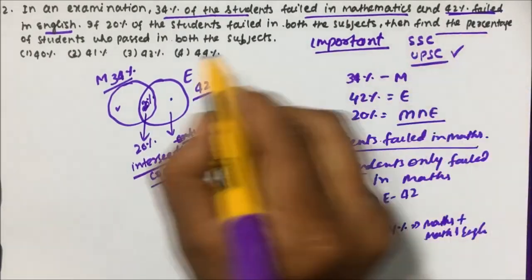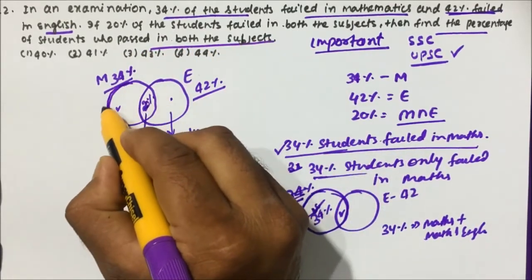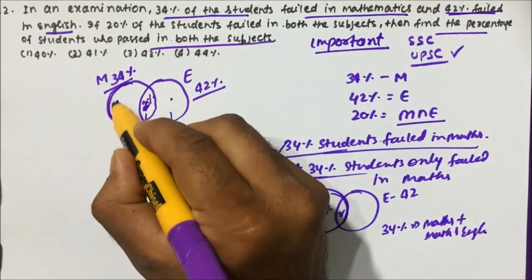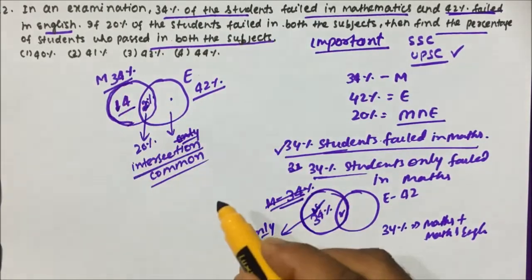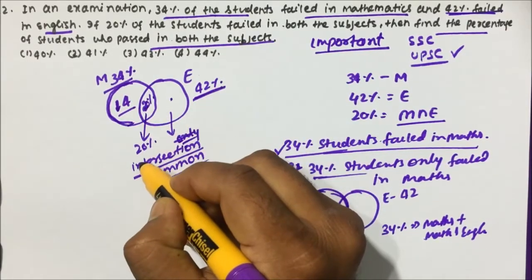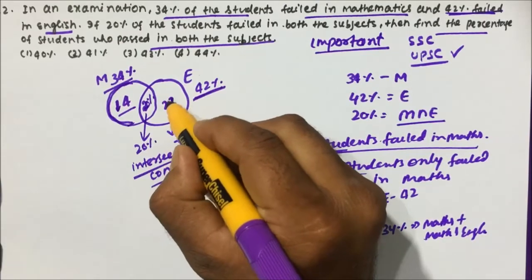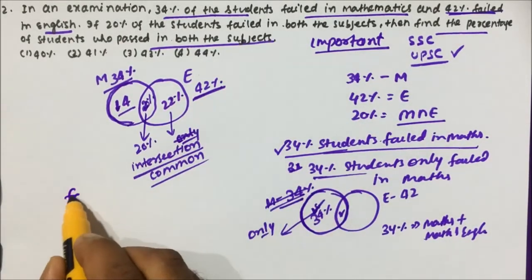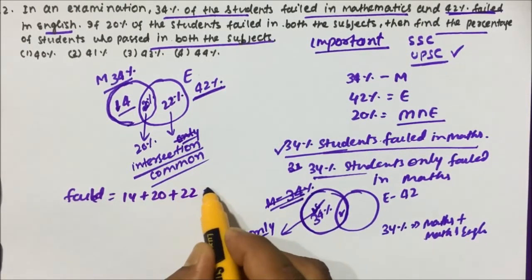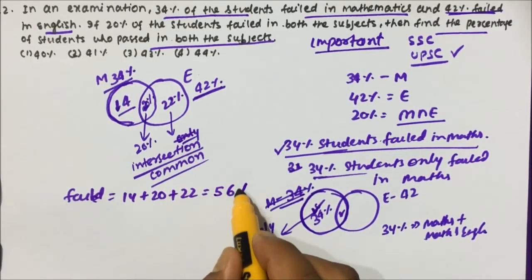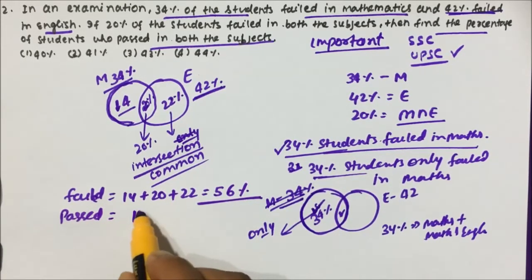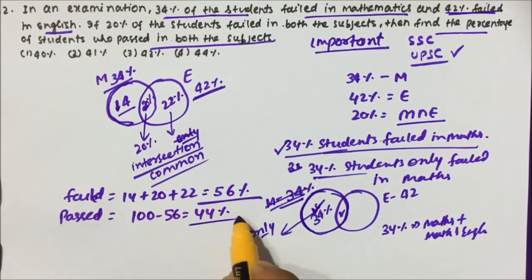They are asking for the percentage who passed in both subjects. Total maths circle is 34 percent; 20 percent is the intersection, so only-maths = 34 − 20 = 14 percent. Total English circle is 42 percent; only-English = 42 − 20 = 22 percent. Total failed = 14 + 20 + 22 = 56 percent. So students who passed in both = 100 − 56 = 44 percent.